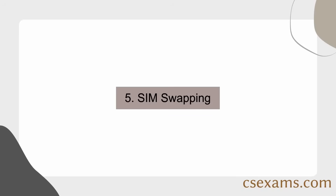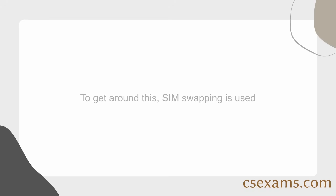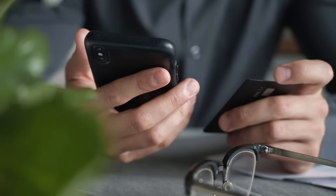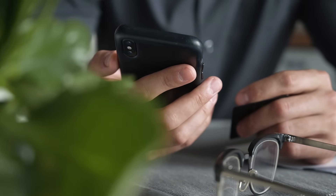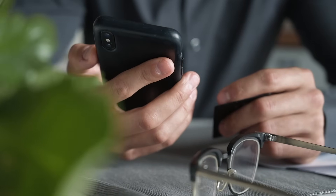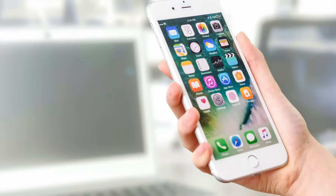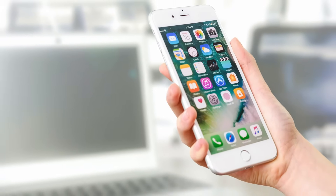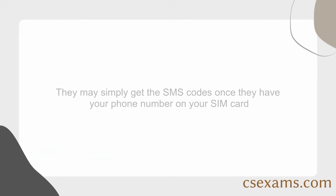Method 5: SIM Swapping. Hackers have a lot of trouble due to SMS authentication codes. To get around this, SIM swapping is used. To accomplish a SIM swap, a hacker impersonates you and contacts your mobile company. They claim to have misplaced their phone and would like their old number — which is your current number — transferred to their SIM card. If they succeed, the network operator will remove your phone number from your SIM and replace it with the hacker's. They may then simply get the SMS codes once they have your phone number on their SIM card.